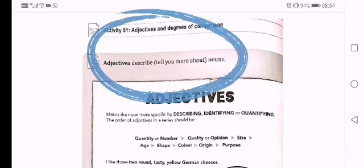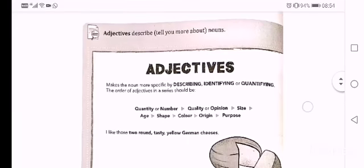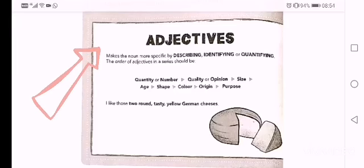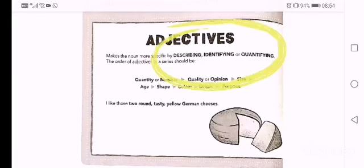Adjectives describe nouns. They tell you more about the noun. So if you look at the example, they also give you a nice explanation. The adjectives make the nouns more specific by describing, identifying, or quantifying.